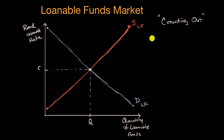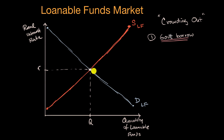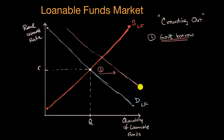So what happens if — step one — the government decides to borrow to fund some of its spending? What is going to happen to these curves? Well, if at any given interest rate, you suddenly have a big borrower like the government entering the market for loanable funds, that's going to increase the demand for loanable funds. So step one is going to shift the demand for loanable funds curve to the right — we'll call that demand for loanable funds prime.